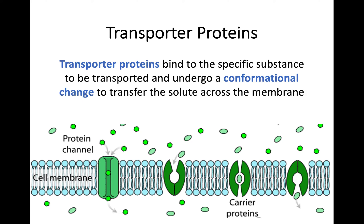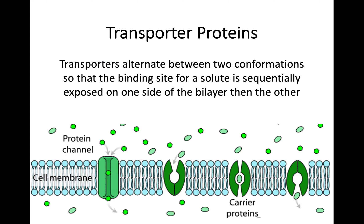In terms of transporter proteins, they do exactly as the name suggests — they transport whatever substance needs to be moved from one side of the cell membrane to the other, and they go through a conformational change, a change in shape, to transfer that solute across the membrane. As you can see in the diagram, these transporter proteins at one stage open up to allow a solute to bind, then go through a change in shape that allows the molecule to be transported across. The protein opens up with this change of conformation and the solute is released to the other side, and the process can also work in reverse. So these transporters alternate between two different conformations to allow binding and then exposure on the other side to release that solute.